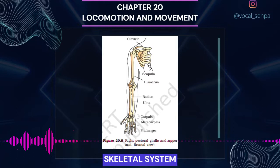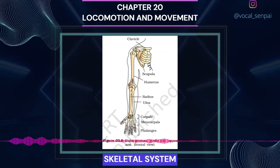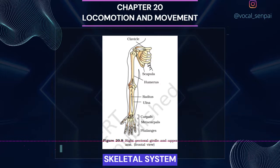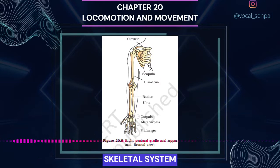The bones of the limbs along with their girdles constitute the appendicular skeleton. Each limb is made of 30 bones. The bones of the hand (forelimb) are: humerus, radius and ulna, carpals (wrist bones, 8 in number), metacarpals (palm bones, 5 in number), and phalanges (digits, 14 in number).